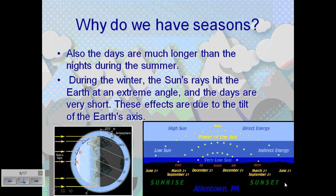So, why do we have seasons? The days are much longer than the nights during the summer. During the winter, the sun's rays hit the Earth at such an extreme angle, and the days are very short. These effects are, again, due to the tilt of the Earth's axis.